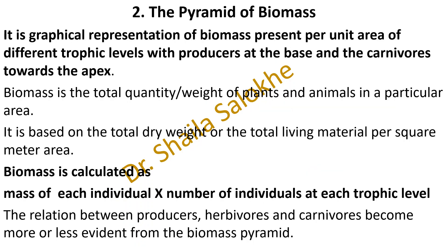The next is the pyramid of biomass. It is a graphical representation of biomass present per unit area of different trophic levels, with producers at the base and carnivores towards the apex. Biomass is the total quantity or weight of plants and animals in a particular area, based on the total dry weight or the total living material per square meter area. The biomass is calculated as mass of each individual multiplied by the number of individuals at each trophic level.